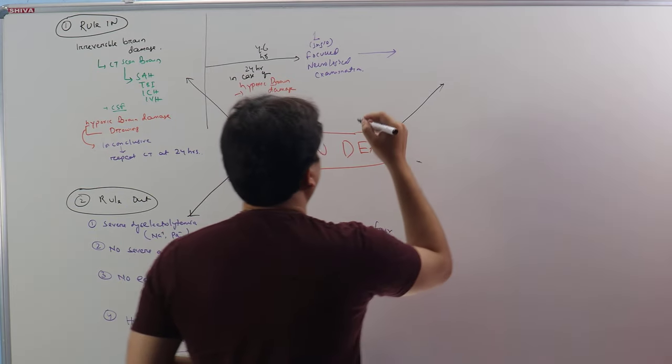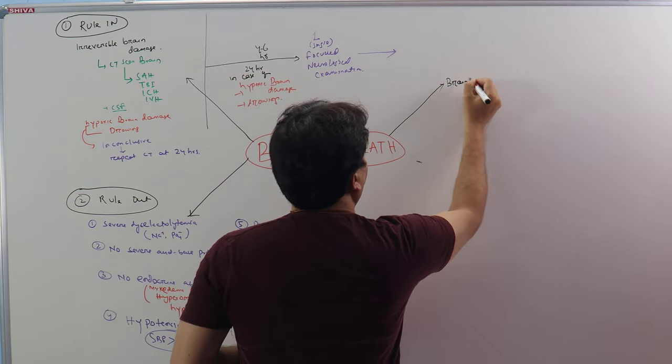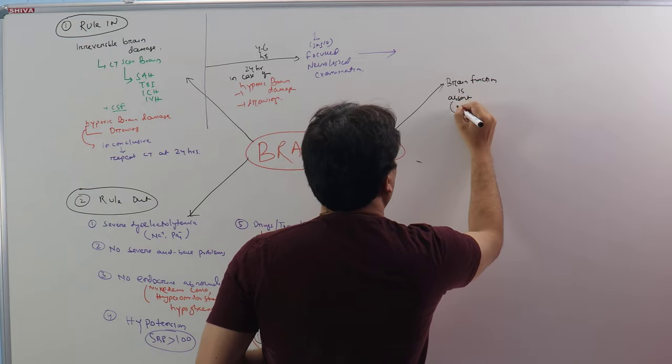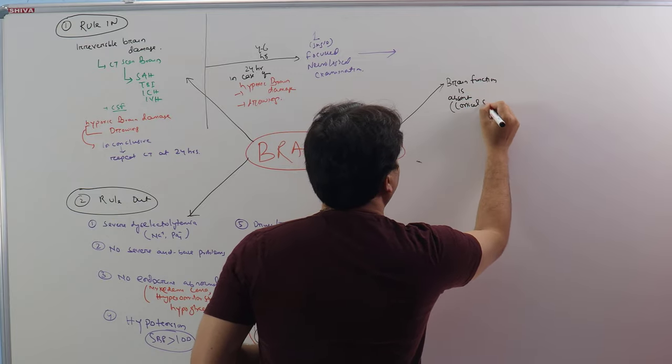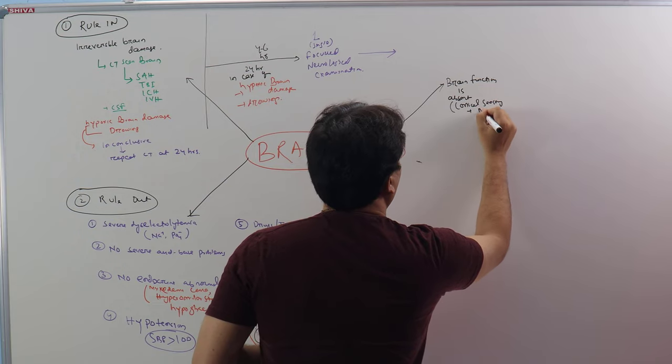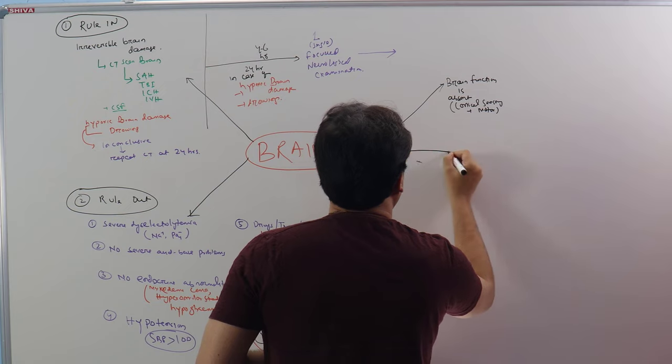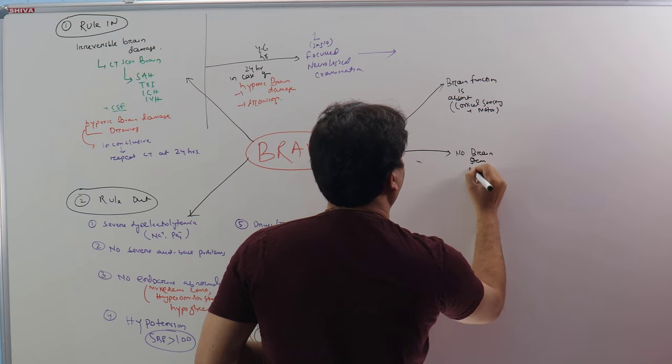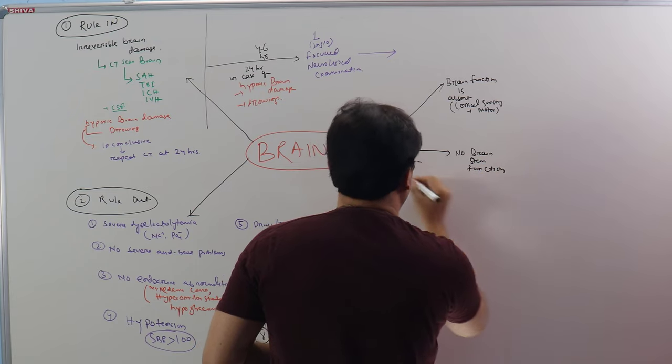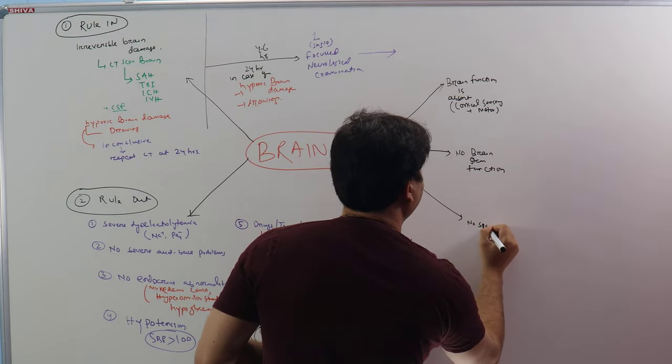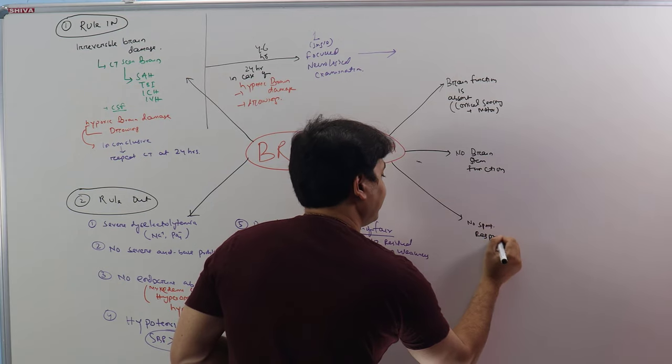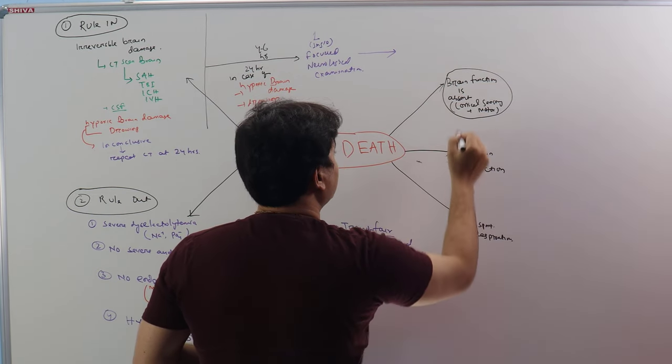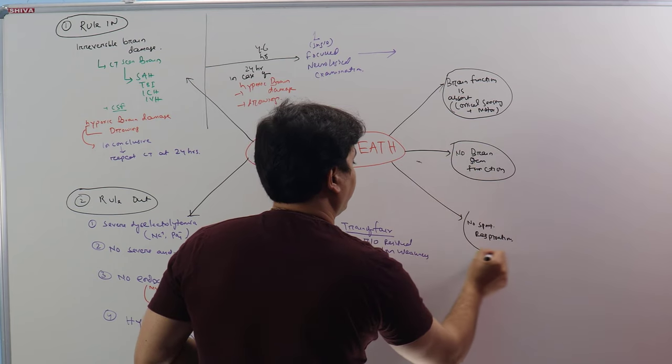First, you have to prove in that examination there is no brain function. Brain function is absent. That includes cortical sensory plus motor. Second will be no brainstem function. And third will be no spontaneous respiration. These three have to be proved. Before going into details, let us draw a diagram.